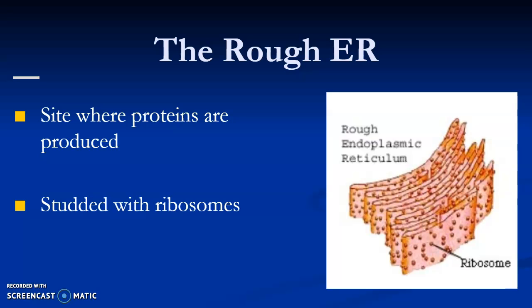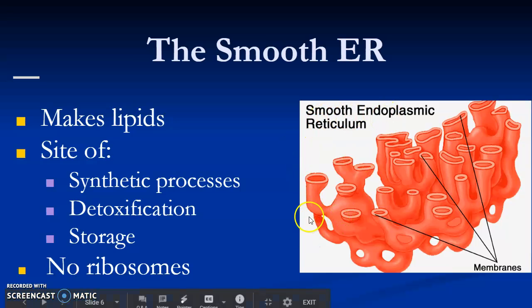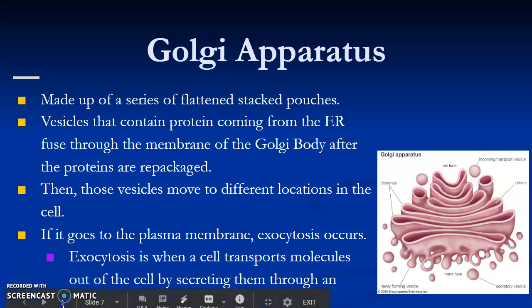The smooth ER makes lipids. As you can see, it has no ribosomes — those are its little membranes. It is a site of synthetic processes, detoxification, and storage. The Golgi apparatus is made up of a series of flattened pouches — see how they're kind of curved a little.